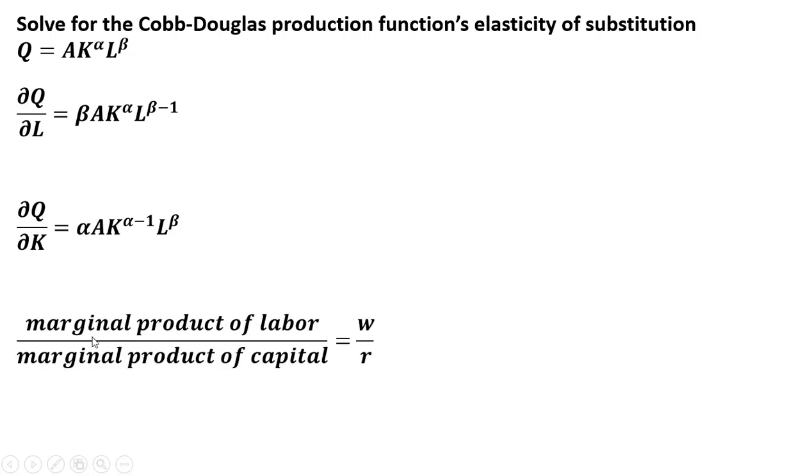When the firm is using the optimal input mix, the marginal product of labor divided by the marginal product of capital will equal the wage divided by the price of capital. Making our substitutions in for the marginal product of labor and marginal product of capital, we get this result.